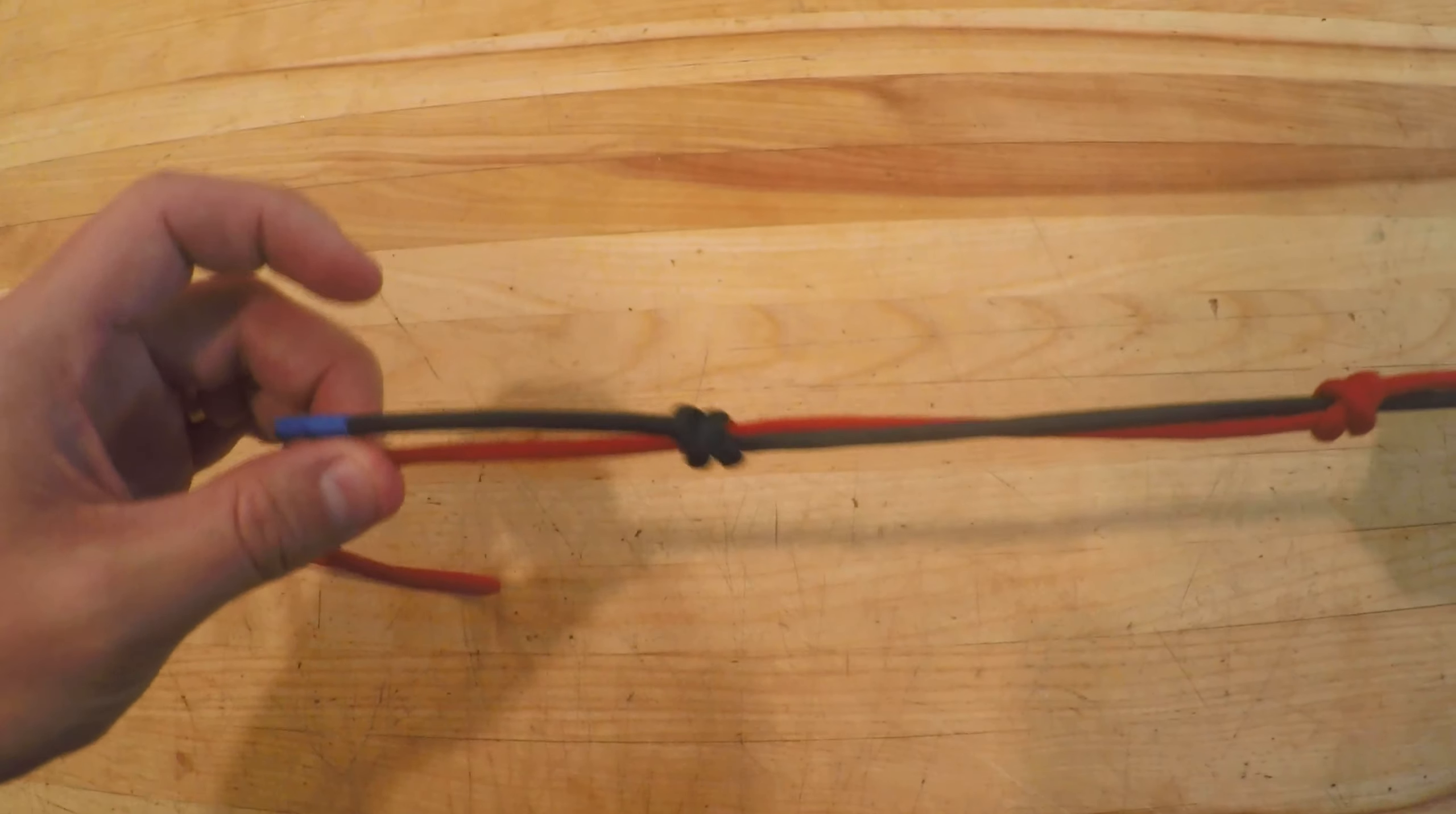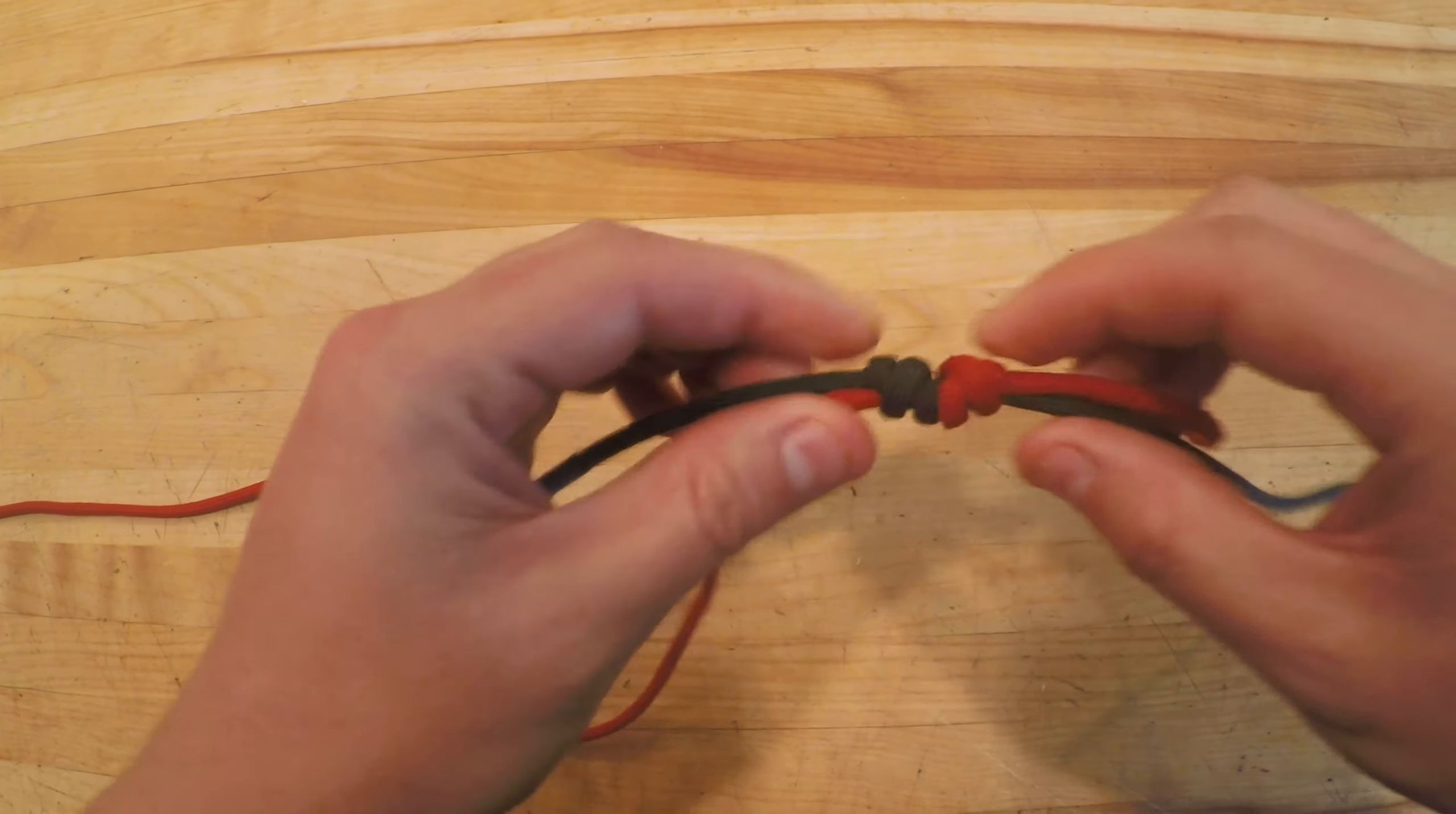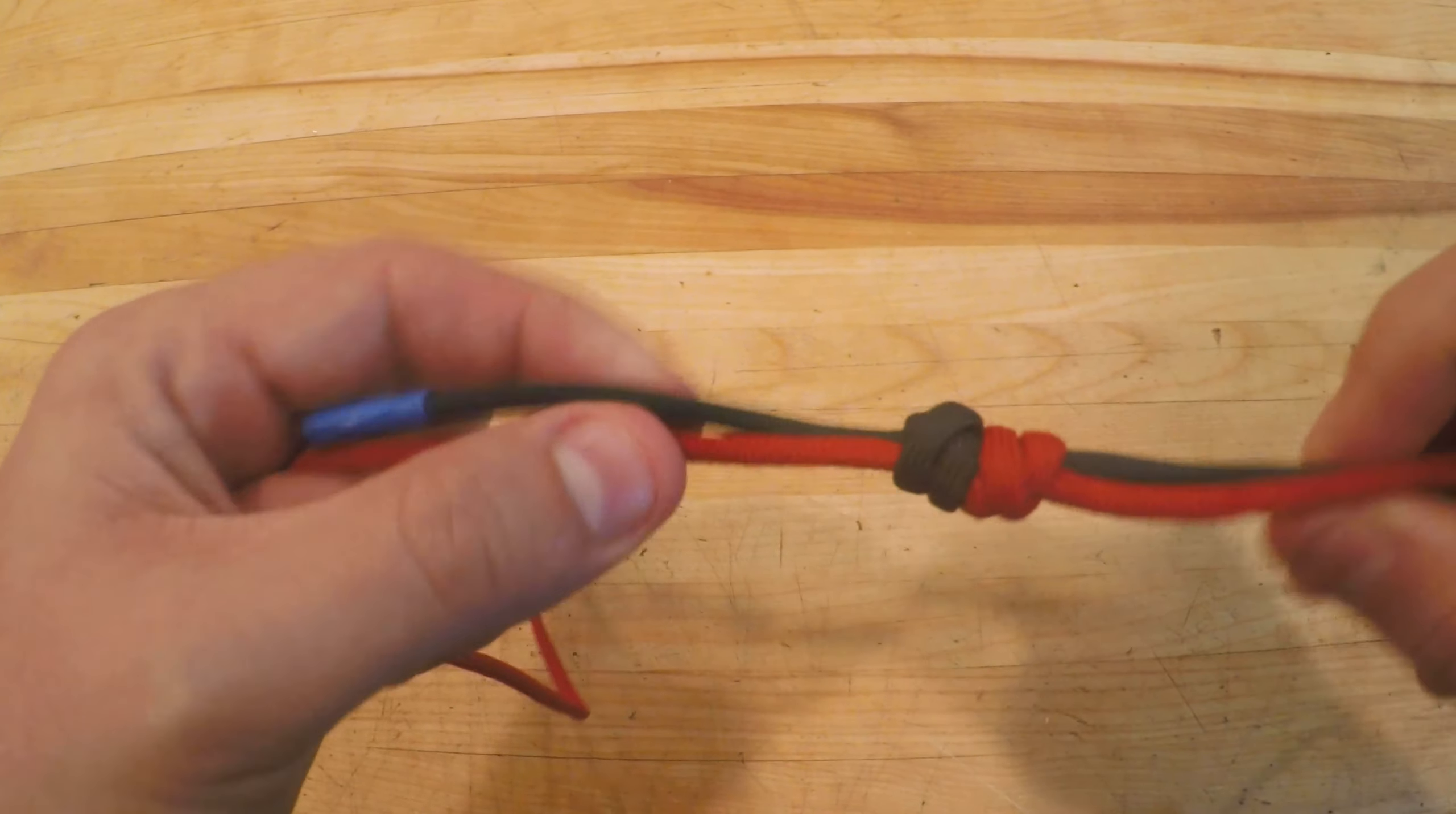Lastly all you do is pull on the standing end of each rope and the knot should properly cinch down onto each other.